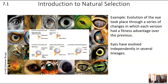If we want to look at a specific example of natural selection, we could look at the evolution of the eye. The evolution of the eye took place through a series of changes in which each version had a fitness advantage over the previous. As you can see in this diagram, it started as just a flat area of light-sensitive cells, and over evolutionary time, through generation after generation, eyes have evolved to become much more complex.